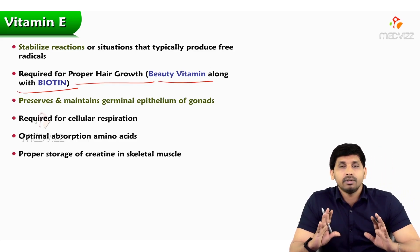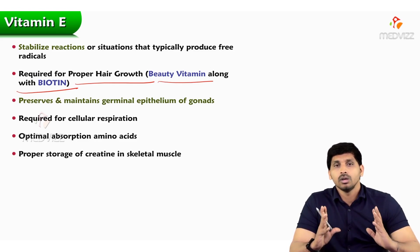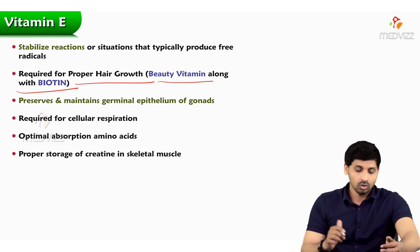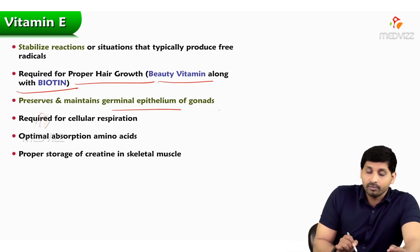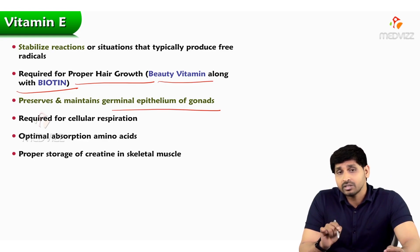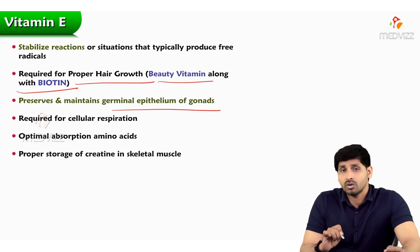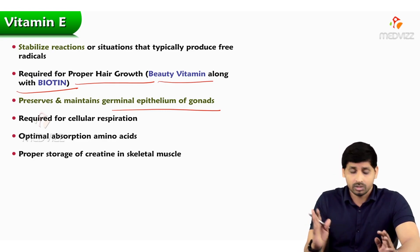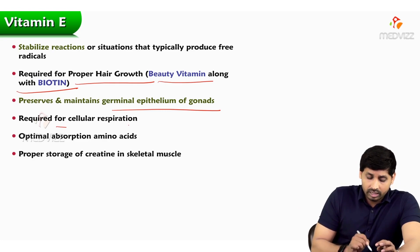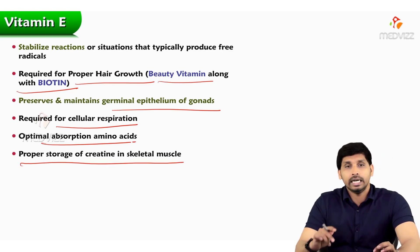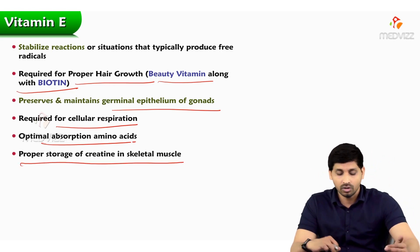Vitamin E is otherwise known as the beauty vitamin, along with biotin. It preserves and maintains the germinal epithelium of gonads, so it is also called the anti-sterility vitamin because it maintains the germinal epithelium of reproductive organs, thereby preventing sterility in animals. It is also required for cellular respiration, optimal absorption of amino acids, and proper storage of creatine in skeletal muscles.